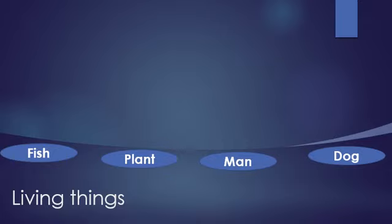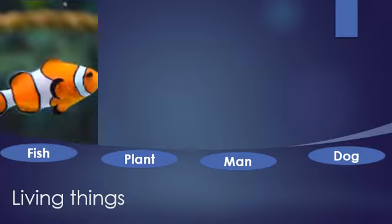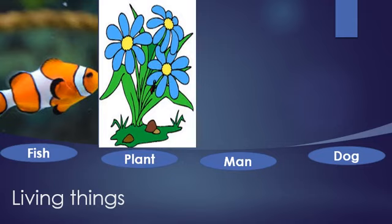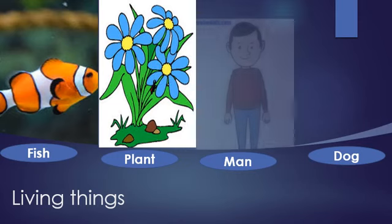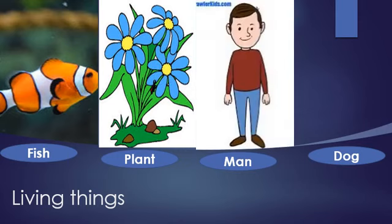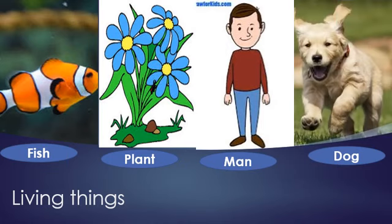For examples of living things, you can see fish — fish which lives in water. Next you can see plants. Have you all seen plants outside when you go outside? Plants, man — us — man means you, me, your parents, your friends — everybody comes under living things.